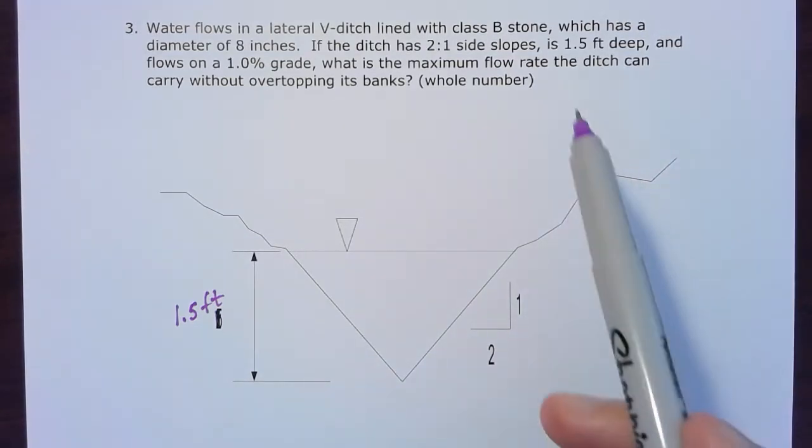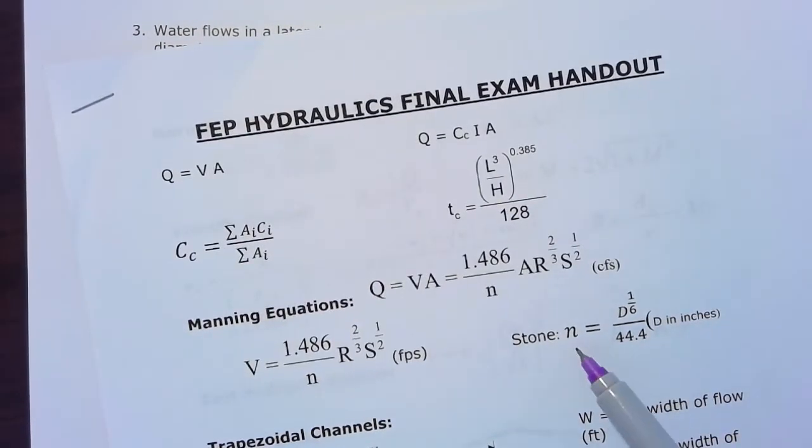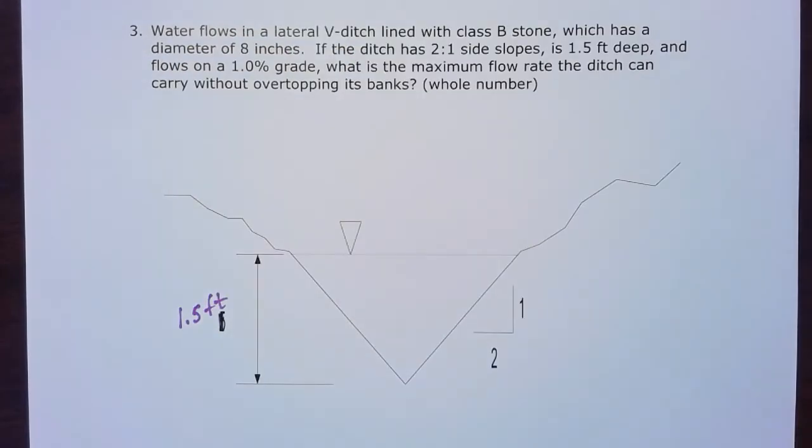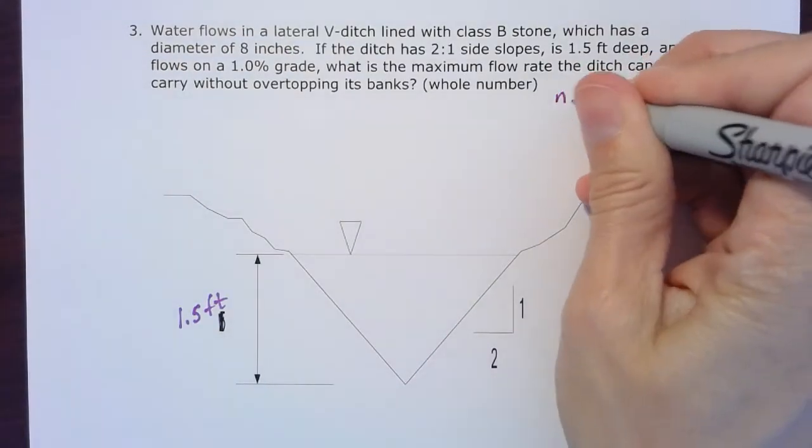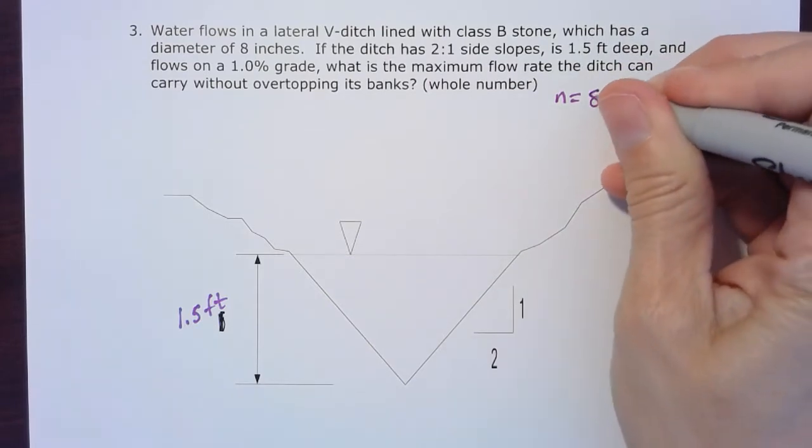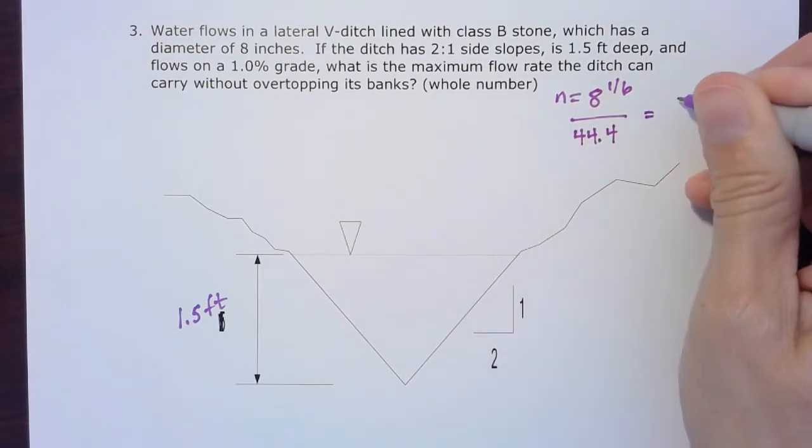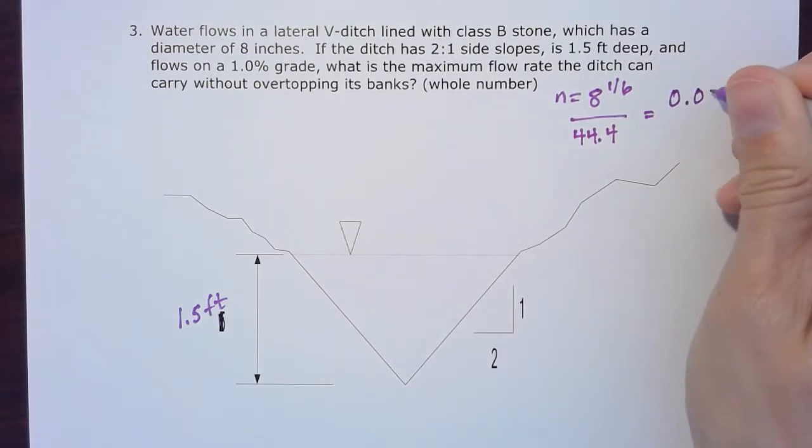The first thing I'm going to notice is the stone diameter, which lets me figure out Manning's n. To do that, I'll follow this equation from the equation sheet: for stone, Manning's n equals diameter to the one-sixth power, diameter in inches, divided by 44.4. So Manning's n equals eight to the one-sixth divided by 44.4, which gives me a Manning's n of 0.032.